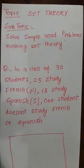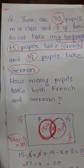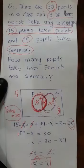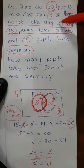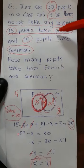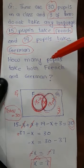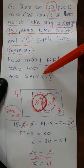In this video, we will be discussing a topic from set theory, and the subtopic will be solving simple word problems involving set theory. Starting from a question: there are 30 pupils in a class and 3 of them do not take any language. 15 pupils take French and 19 pupils take German. How many pupils take both French and German?